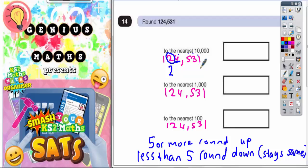Any digits after it become zeros. So the 4 becomes 0, the 5 becomes 0, the 3 becomes 0, the 1 becomes 0. But any digits before it just need to go in. So the 1 just needs to go in. So your final answer is 120,000.